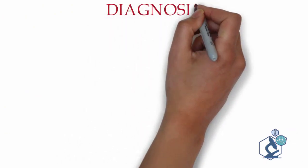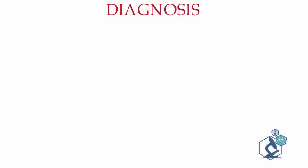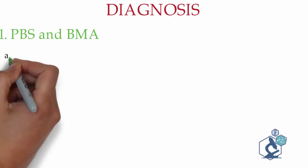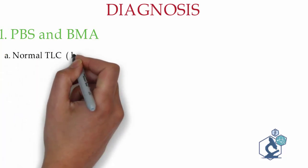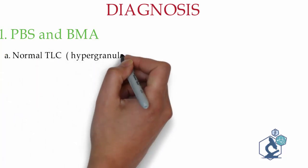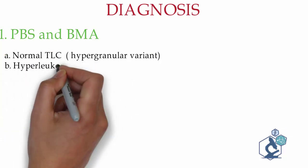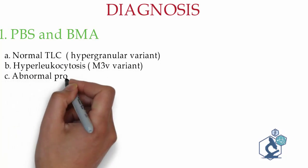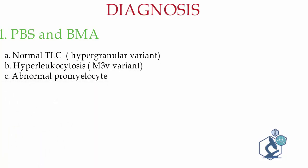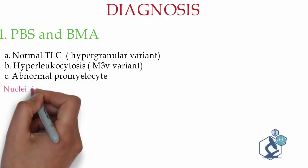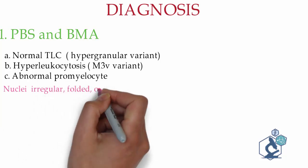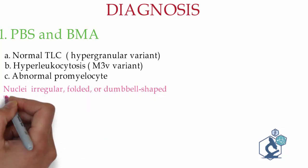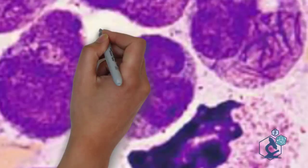APML is diagnosed easily on peripheral blood smear and bone marrow examination. It can have a normal TLC in the classical variant or hyperleukocytosis in the microgranular variant. An abnormal promyelocyte has a nucleus which is irregular, folded, or dumbbell-shaped — also known as buttock-shaped or apple core deformity.